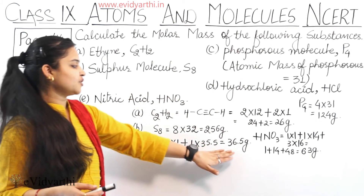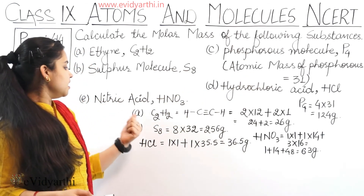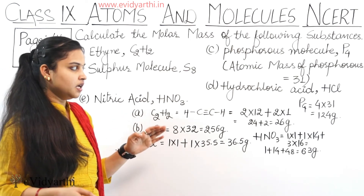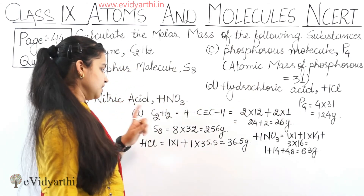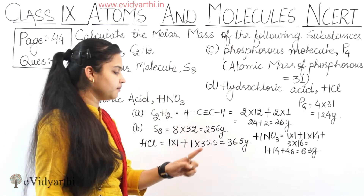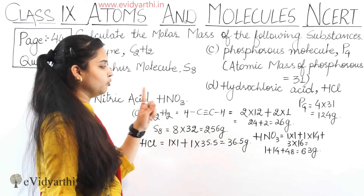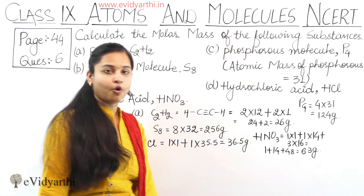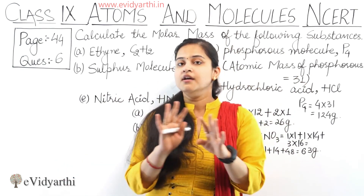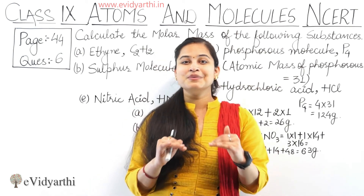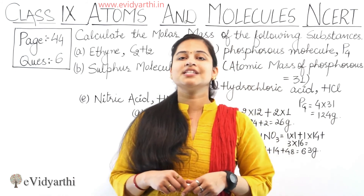To summarize: molar mass of HCl is 36.5 grams, phosphorus P4 is 124 grams, sulfur S8 is 256 grams, and ethyne C2H2 is 26 grams. I hope all of you have understood the calculations and the answers to this question. If you have any doubts, please let me know in the comment box below. This is Rakhi, signing out. Take care and goodbye!